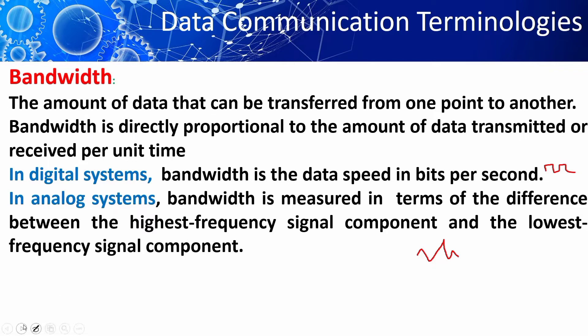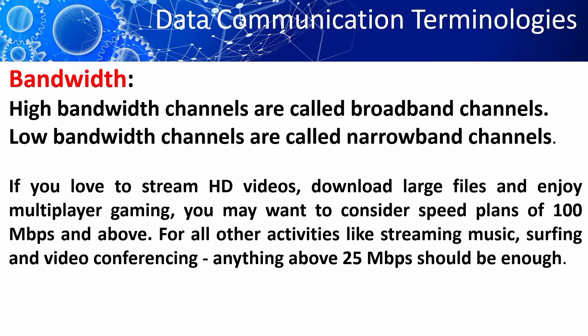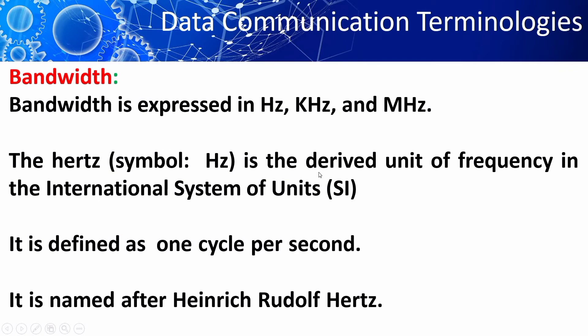In digital systems, the bandwidth is the data speed in bits per second. In analog systems, the bandwidth is measured in terms of the difference between the highest frequency signal and the lowest frequency signal. High bandwidth channels are called broad bandwidth channels and low bandwidth channels are called narrow bandwidth channels. To download large files and enjoy multiplayer gaming, the speed of the network should be 100 megabytes per second or more.